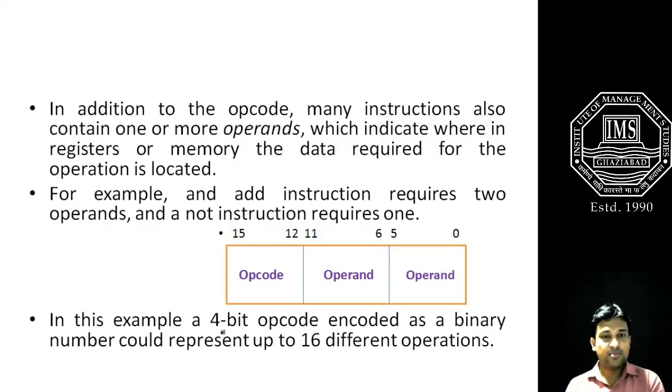Then in this example, a 4-bit opcode encoded as a binary number could represent up to 2 raised to power 4 equals 16 different operations.